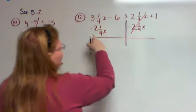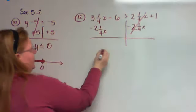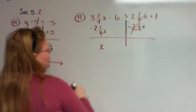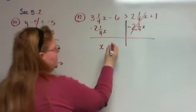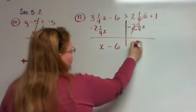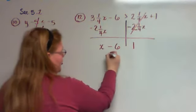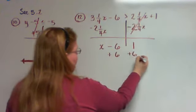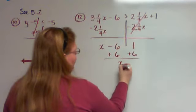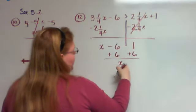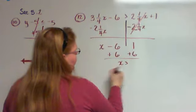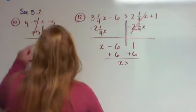When I subtract 2¼x from 3¼x, that just leaves me with 1x. So see, the fraction took care of itself. Minus 6 and a 1 on that side. So now I need to add 6 to both sides.